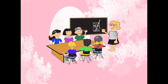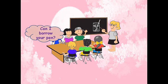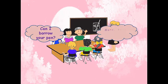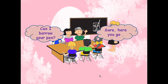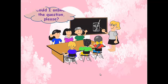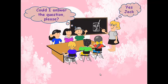Now look at this picture — we have an example: 'Can I borrow your pen?' 'Sure, here you go.' She is requesting from her friend, so she used 'can' because it is an informal situation. Now look at this next example: 'Could I answer the question please?' — here the student is asking his teacher, so because of that he used 'could', which is more formal.